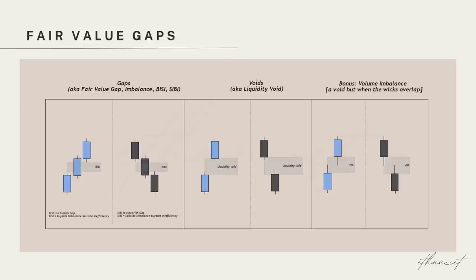When looking for inefficiencies in the market, I look for three types of gaps: fair value gaps, liquidity voids, and volume imbalances. Fair value gaps are formations of three consecutive candles. A bullish fair value gap is created when candle number one's wick high does not meet candle number three's wick low. A bearish fair value gap is created when candle number one's wick low does not meet candle number three's wick high.